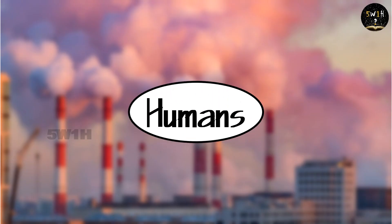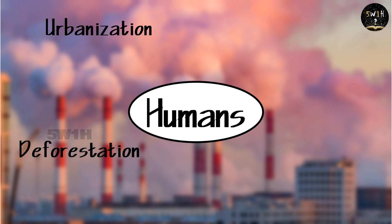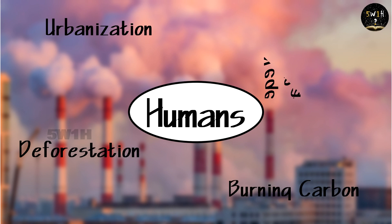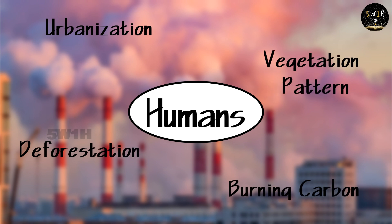The first thing is urbanization. The second thing is deforestation. The third thing is carbon material. The fourth thing is our vegetation pattern. These are the 4 things.